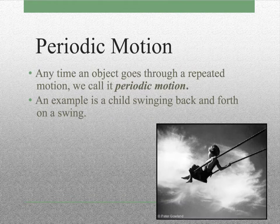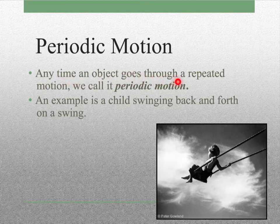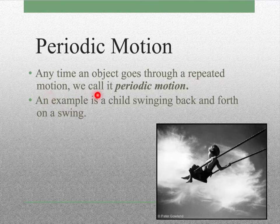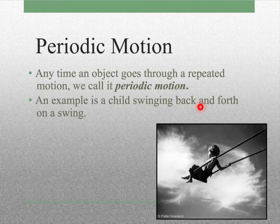With that, we need to look at a few other things first. The first thing we're looking at is something called periodic motion. Anytime an object goes through a repeated motion, we call it periodic motion. An example of a child swinging back and forth on a swing is periodic motion because it's something that repeats.